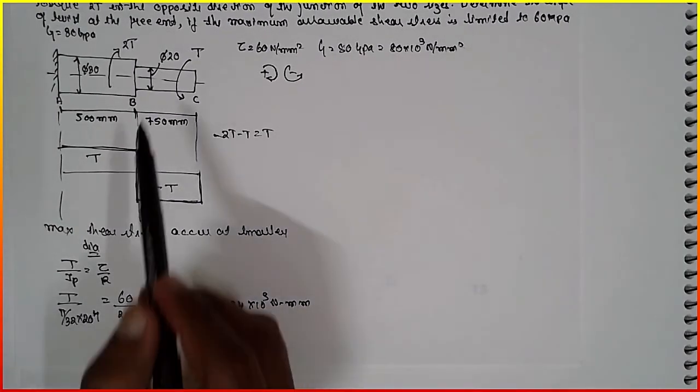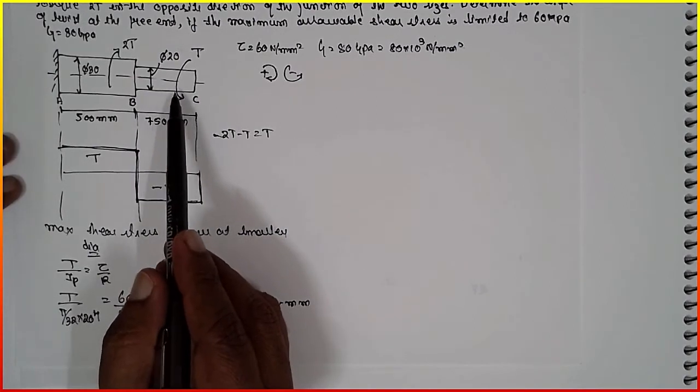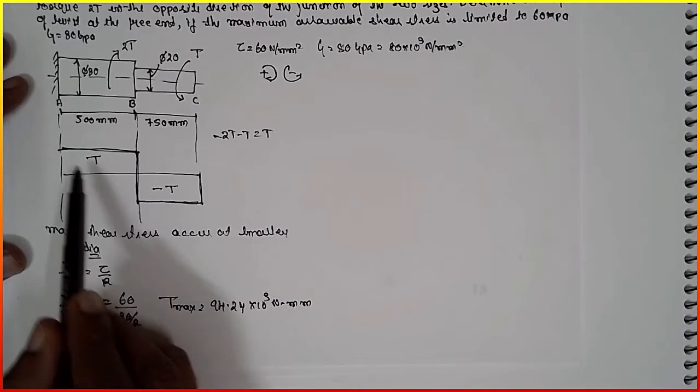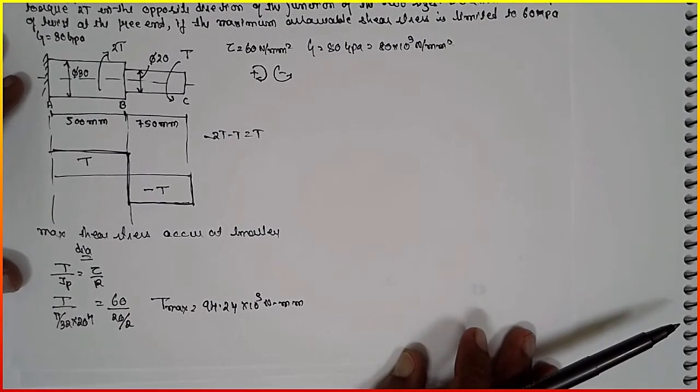In the step section, the smallest section where the shear stress occurs maximum. When the shear stress occurs maximum, the torque is also maximum. See here, negative positive, both has the same torque but in opposite direction.